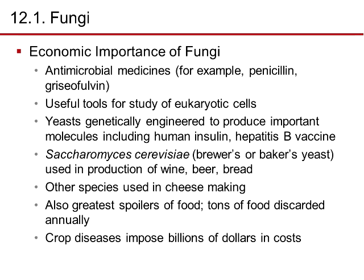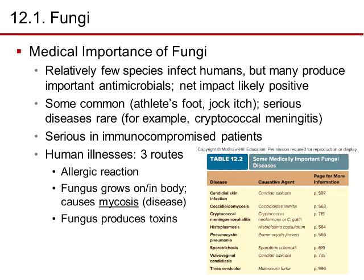The economic importance of fungi is significant. They are part of our antibacterial medicines — for example, penicillin is derived from a fungus, and griseofulvin is a fungus-derived drug used to treat fungal infections. Yeasts are genetically engineered to produce important molecules including human insulin and the hepatitis B vaccine. Saccharomyces cerevisiae — brewer's or baker's yeast — is used in production of wine, beer, and bread. Other species are used in cheesemaking, though fungi are also the greatest spoilers of food, and crop diseases impose billions of dollars in annual costs.